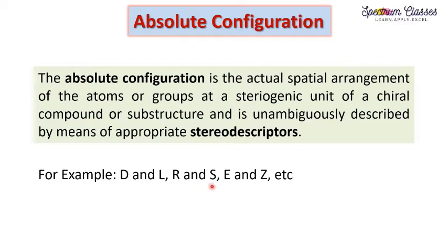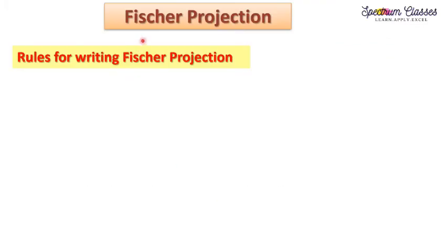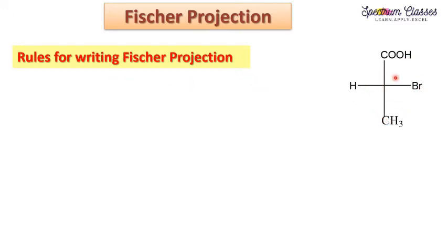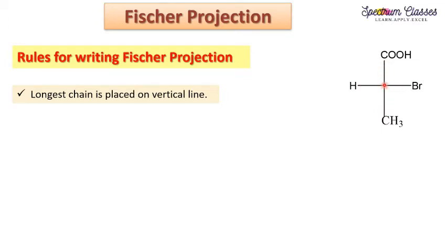In this video we are going to discuss RS nomenclatures or RS stereo descriptors. To define RS stereo descriptors, let us represent the three-dimensional molecule in two dimensions using the Fischer projection. There are several rules to draw the Fischer projection of a 3D molecule. In the Fischer projection there are two different lines — a vertical line and a horizontal line — and at the cross of these two lines is represented the presence of a carbon atom.